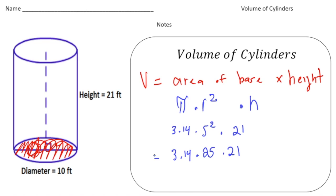This will give us the volume. When I multiply 25 times 3.14 times 21, I get